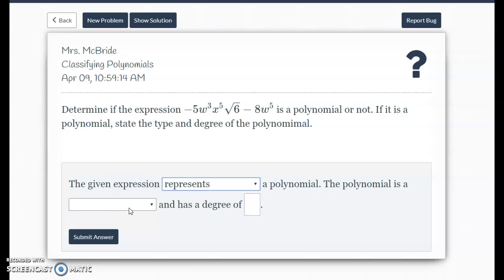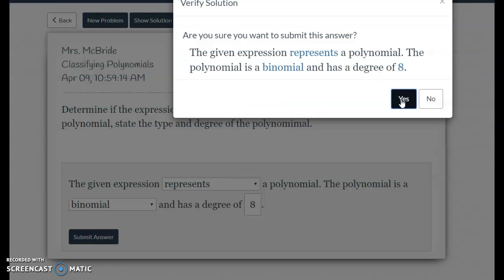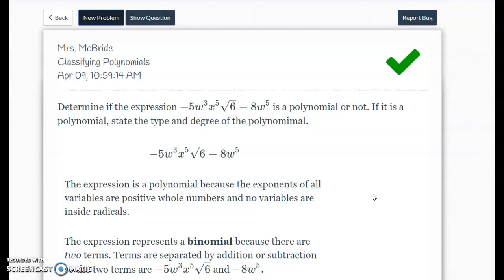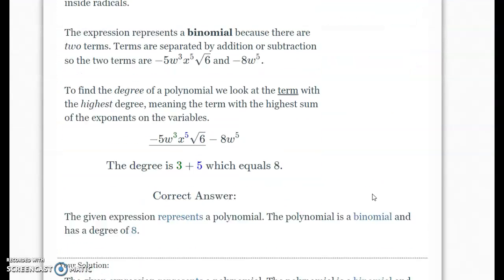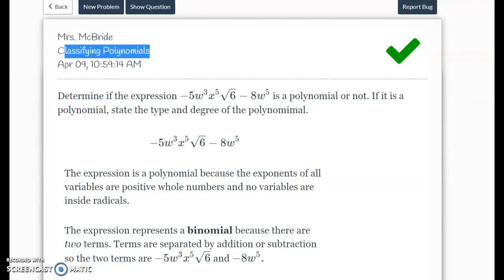The polynomial is a blank. So there are one, two terms, so it's a binomial. And then the degree, well, this term has degree five. And over here, this term has five plus three, so that's eight. So the eight is the greater of the two, so it's a degree of eight. There we go, got it correct. So that is how you do the classifying polynomials part.